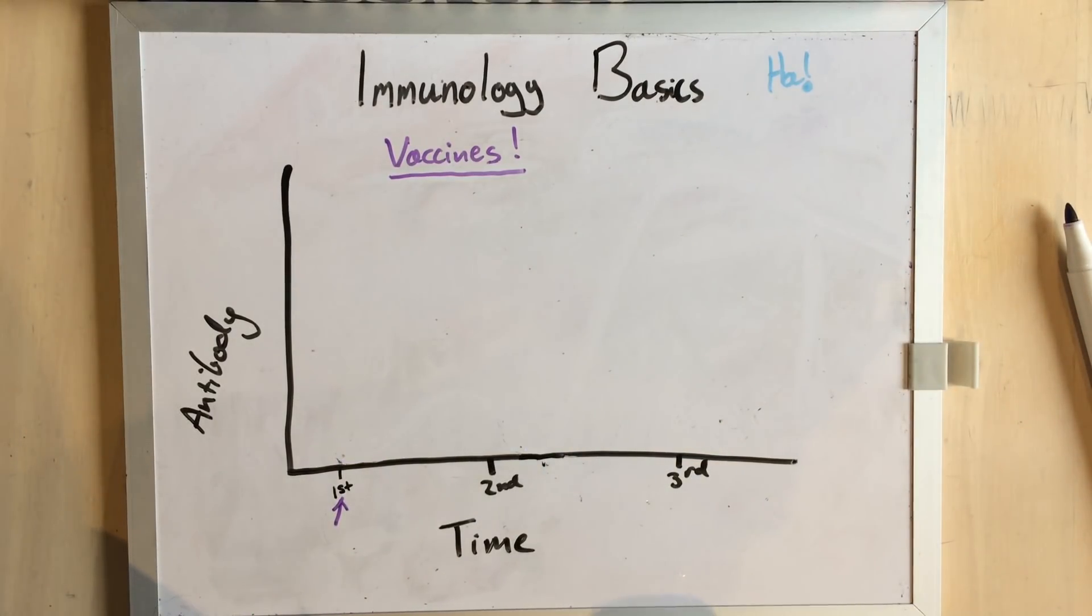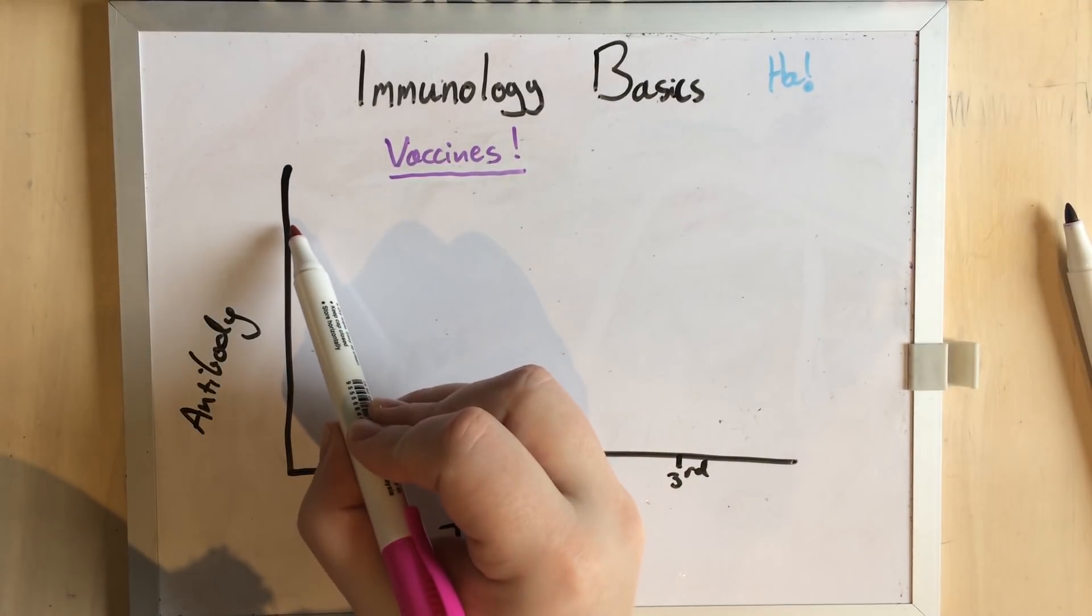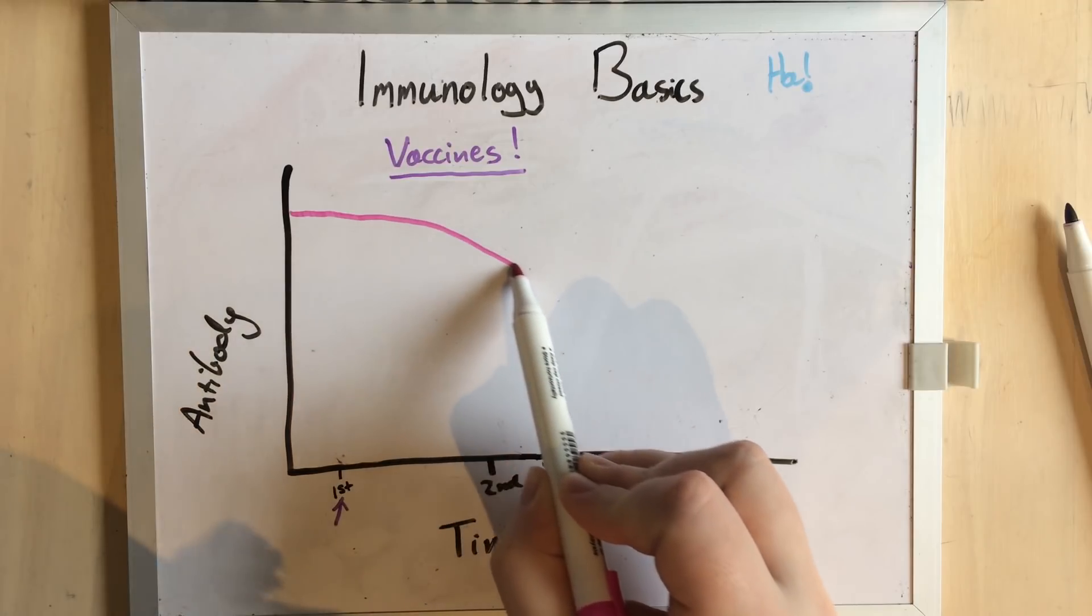So why are puppies and kittens and other baby animals different? That's because they will have antibodies from their mum, either across the placenta or through the milk. That's what colostrum's for.